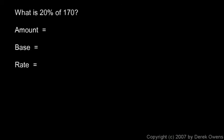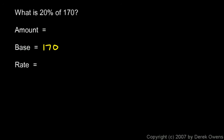In many percent problems, one of the three things — amount, base, or rate — will be unknown. In the next examples, we identify the amount, base, and rate, and if one is unknown, we write 'unknown.' Here's the first one: What is 20% of 170? The whole thing we're taking a part of is 170, so the base is 170. The rate is 20%. We're asked what that fraction of 170 equals — so the amount is unknown.